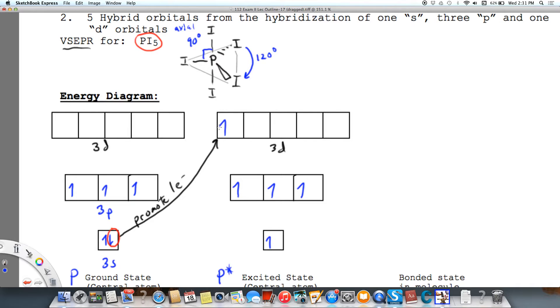So now we have five electrons that are unpaired that we can share with. But we're still not ready to bond because all of these iodines, all the bonds are the same. So now we need to hybridize.